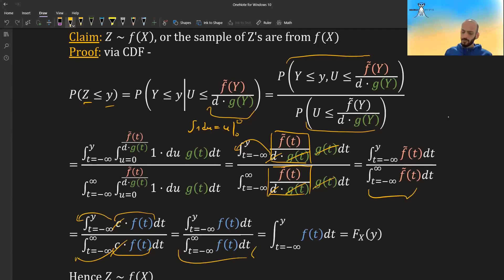And the numerator stays the same, but the denominator, since f is a valid pdf, it's a valid distribution, the denominator is just equal to 1. And so we are just left with this. But this is exactly the definition of the CDF of x, of the variable x, because x distributes according to f(t).